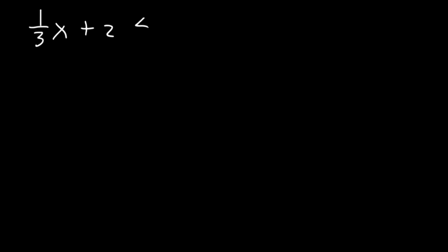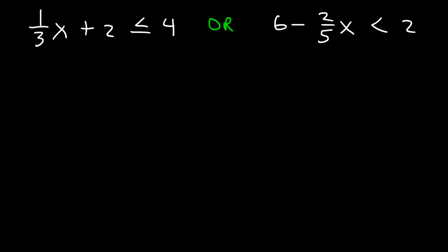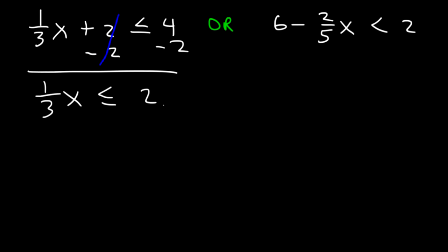Here's another problem: one-third x plus 2 is less than or equal to 4, or 6 minus two-fifths x is less than 2. Pause the video and try this. Starting with the left side, subtract both sides by 2, giving one-third x less than or equal to 4 minus 2, which is 2. To eliminate the fraction, multiply both sides by 3 — 3 times one-third equals 1, so we get x. 2 times 3 is 6. So x is less than or equal to 6.